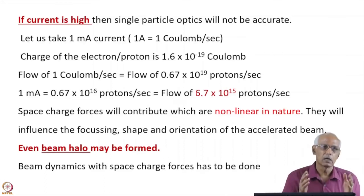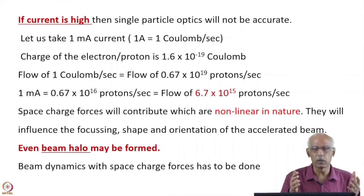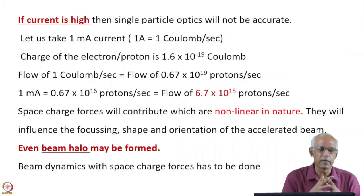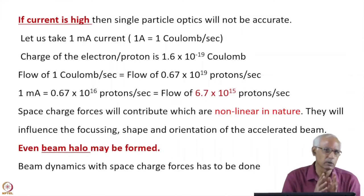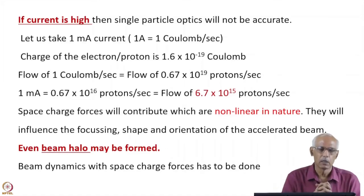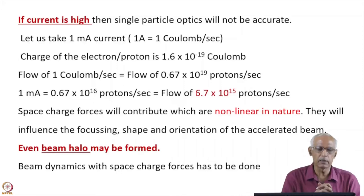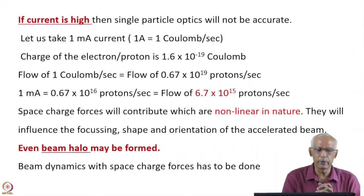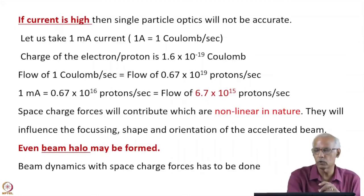Let us take a one milliampere current as an example, since in future experiments we will be needing hundreds of milliamperes. Now, one ampere is the flow of one coulomb of charge per second. The charge of an electron or proton is 1.6×10⁻¹⁹ coulombs. So one milliampere means a flow of 6.7×10¹⁵ protons per second.